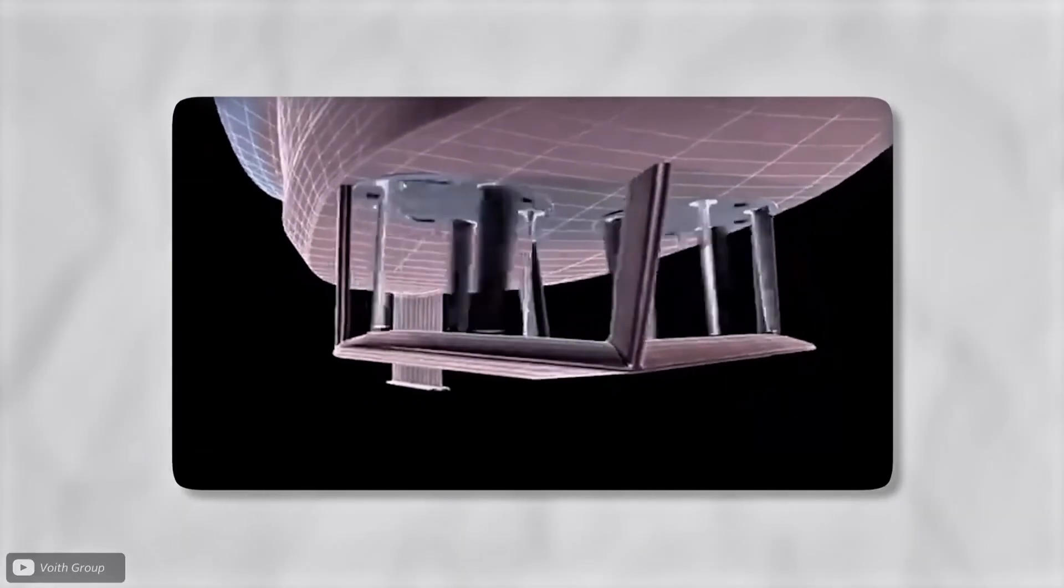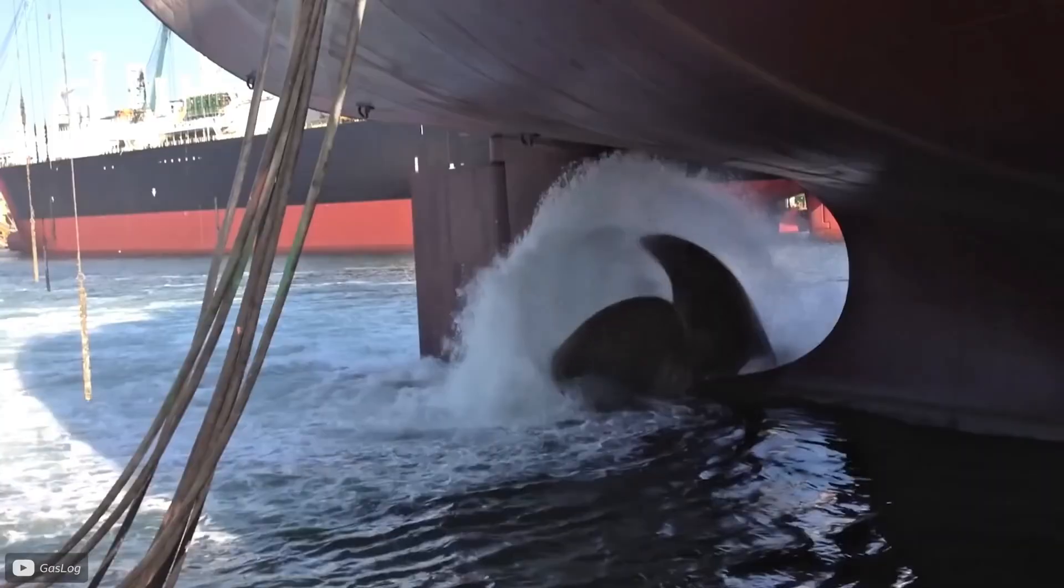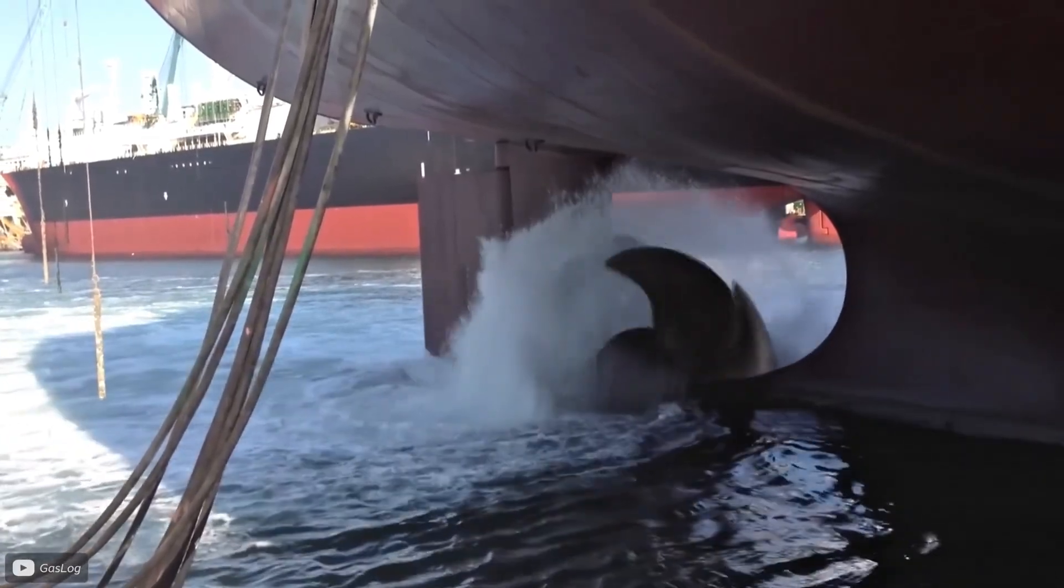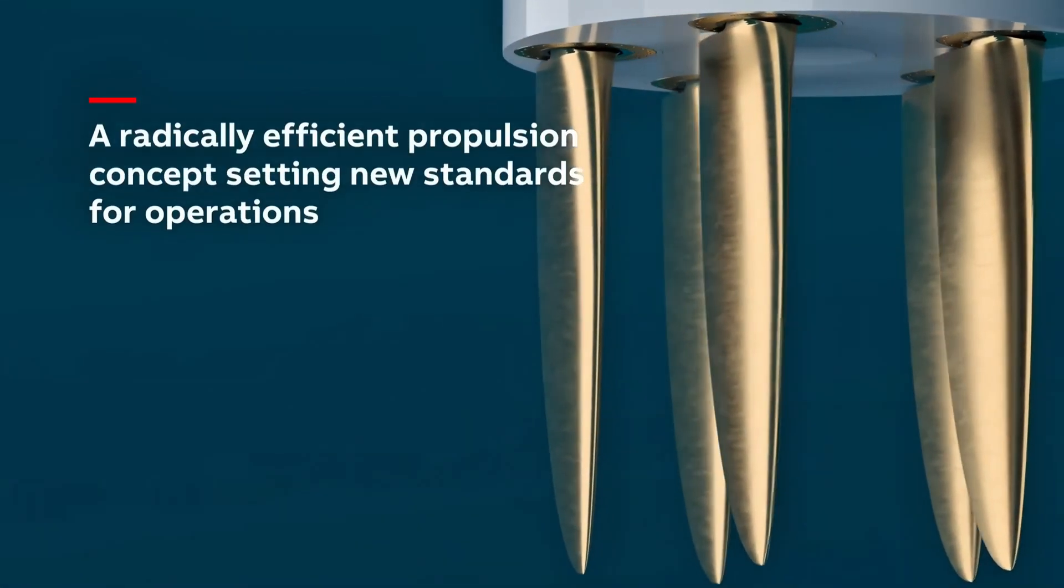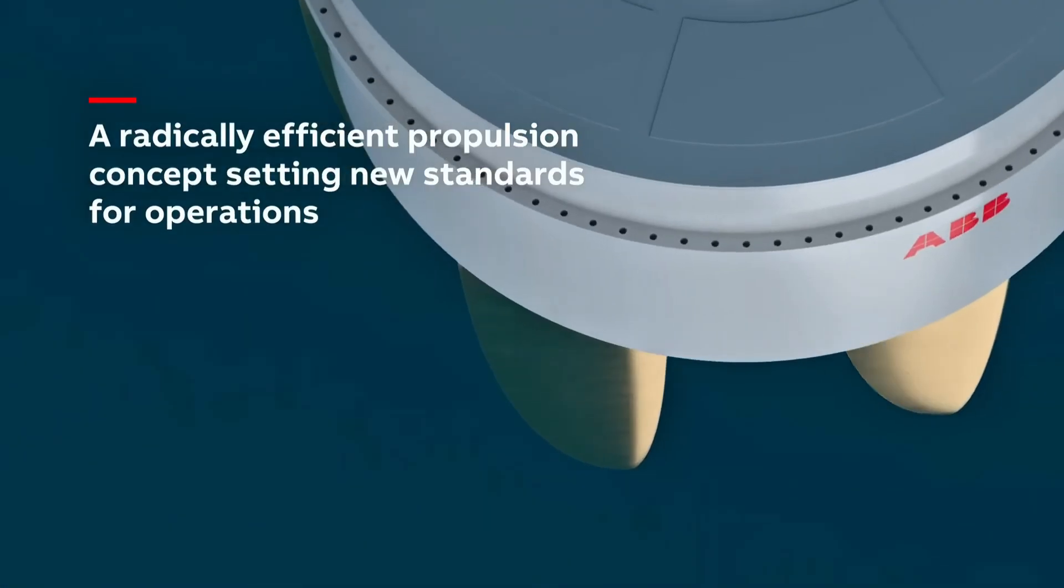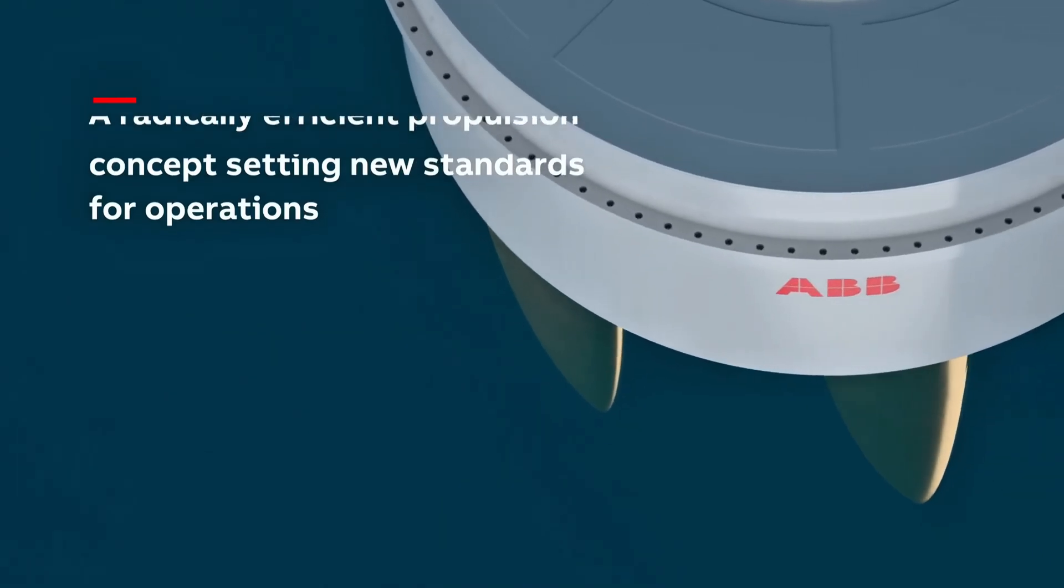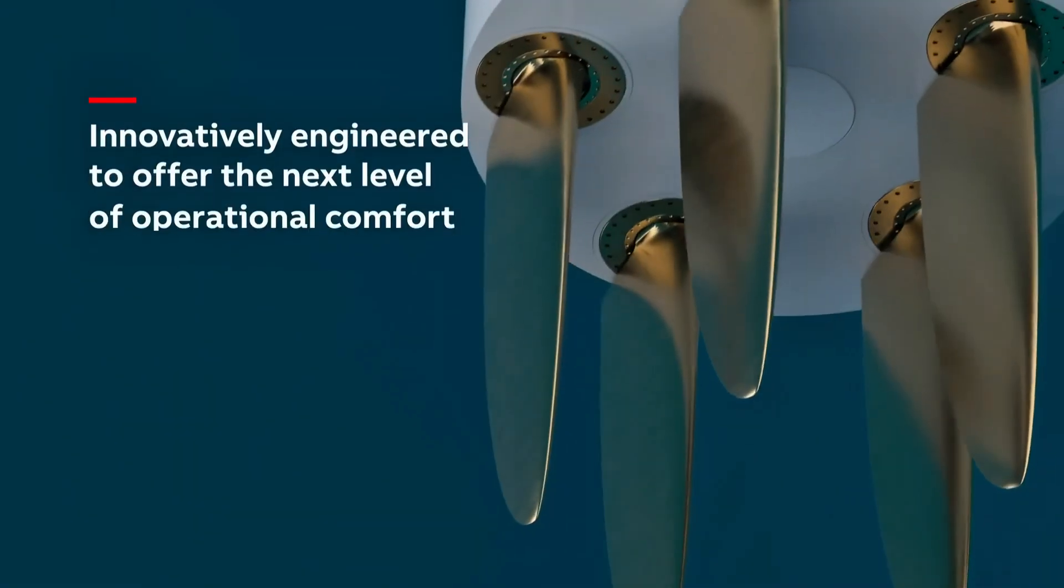Cycloidal thrusters are still very much alive in the marine world today. Offshore supply ships, river ferries, icebreakers, and mining vessels rely on them when precision is key. Here's a twist. In 2023, ABB unveiled the Dynafin Propulsor. This system looks like a row of vertical blades beating together, mimicking a whale's tail.